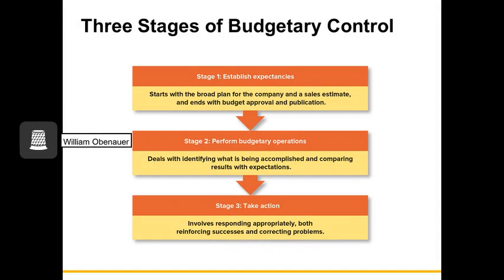The three stages of budgetary control are: first, establishing expectancies by developing the budget, similar to setting performance standards; second, performing budgetary operations by comparing actual performance to the budget and looking for deviations, combining measuring and comparing performance steps; and third, taking action — determining how to impact performance or whether to change budgets — similar to correcting problems and reinforcing successes in the bureaucratic control system.